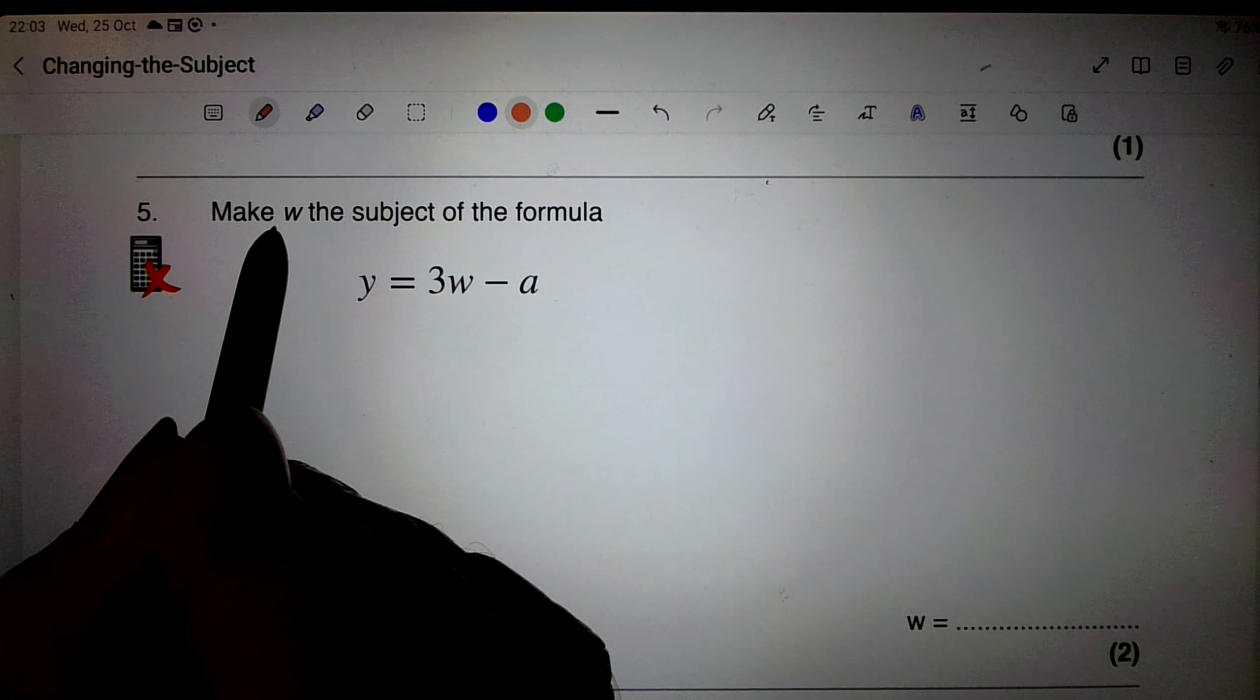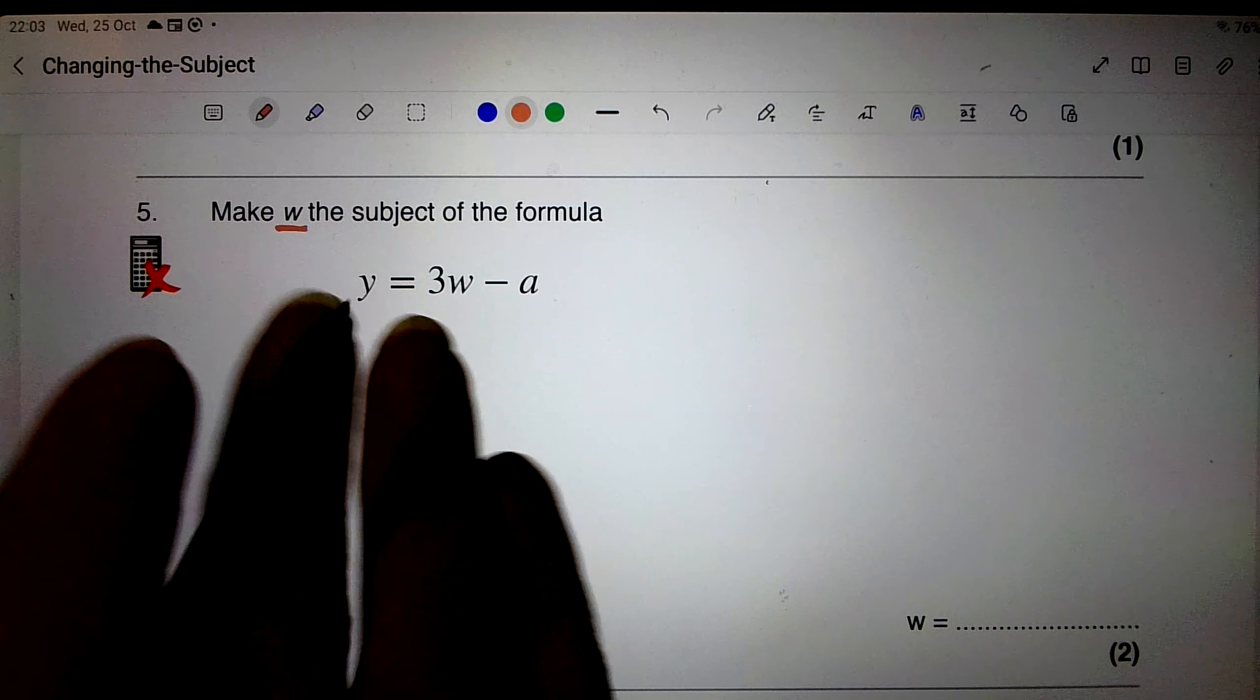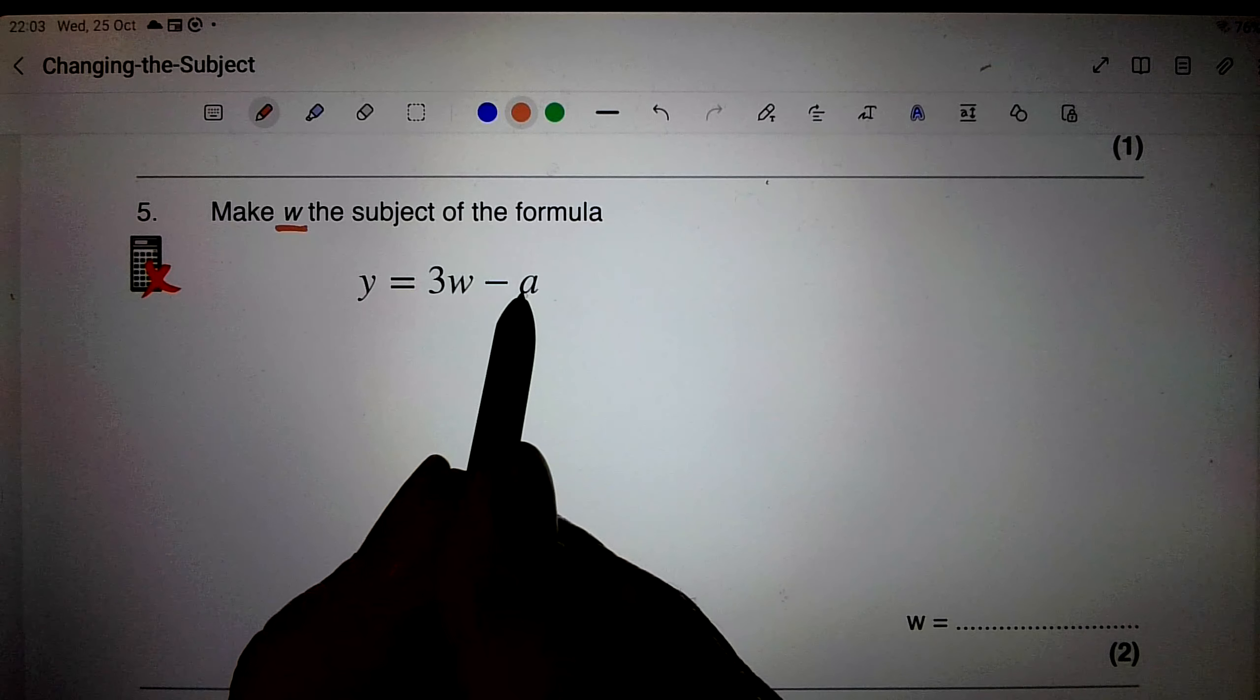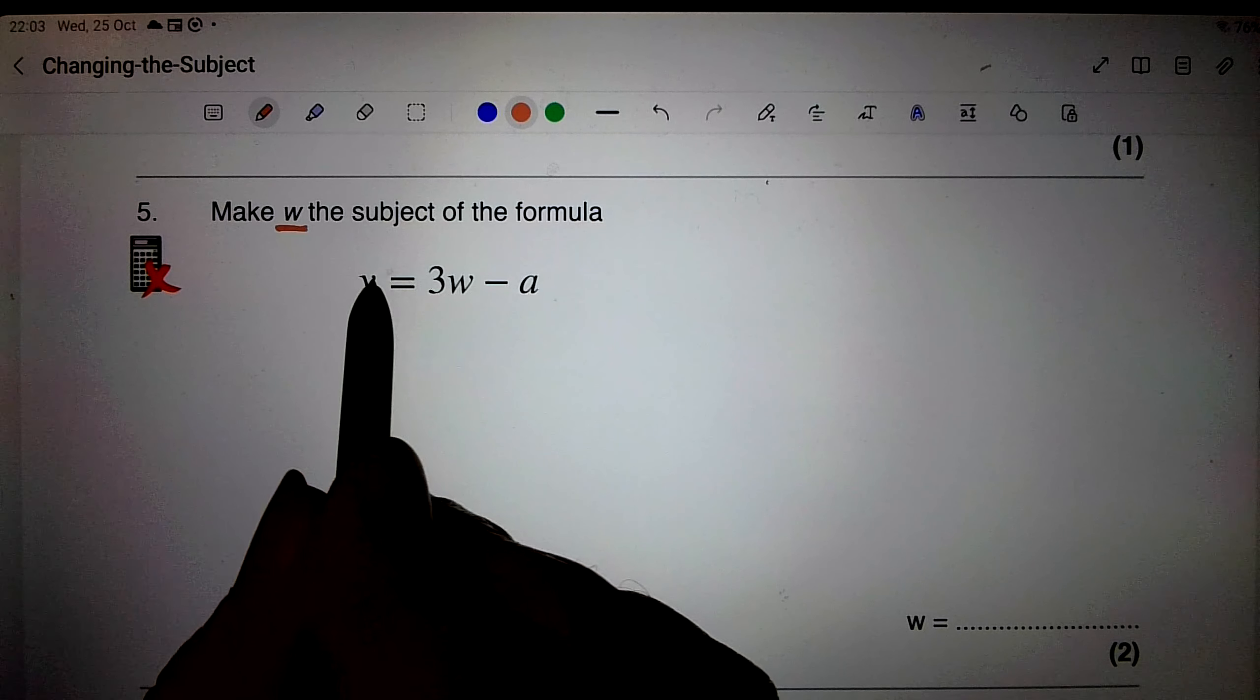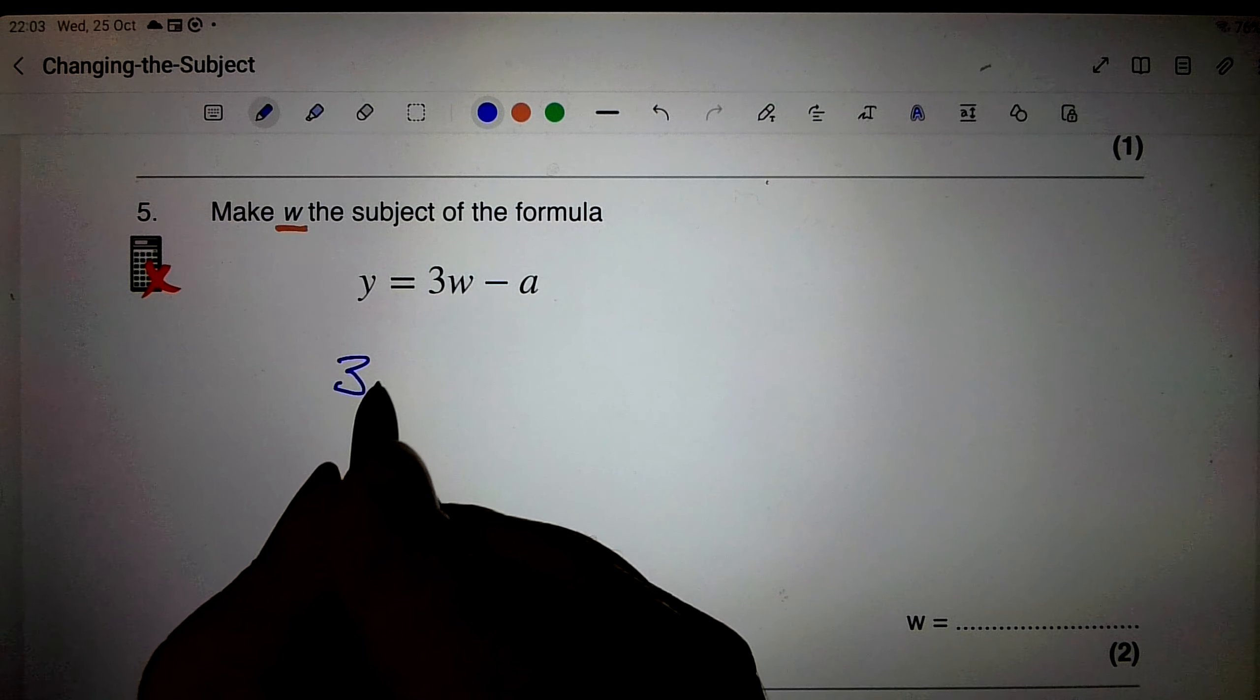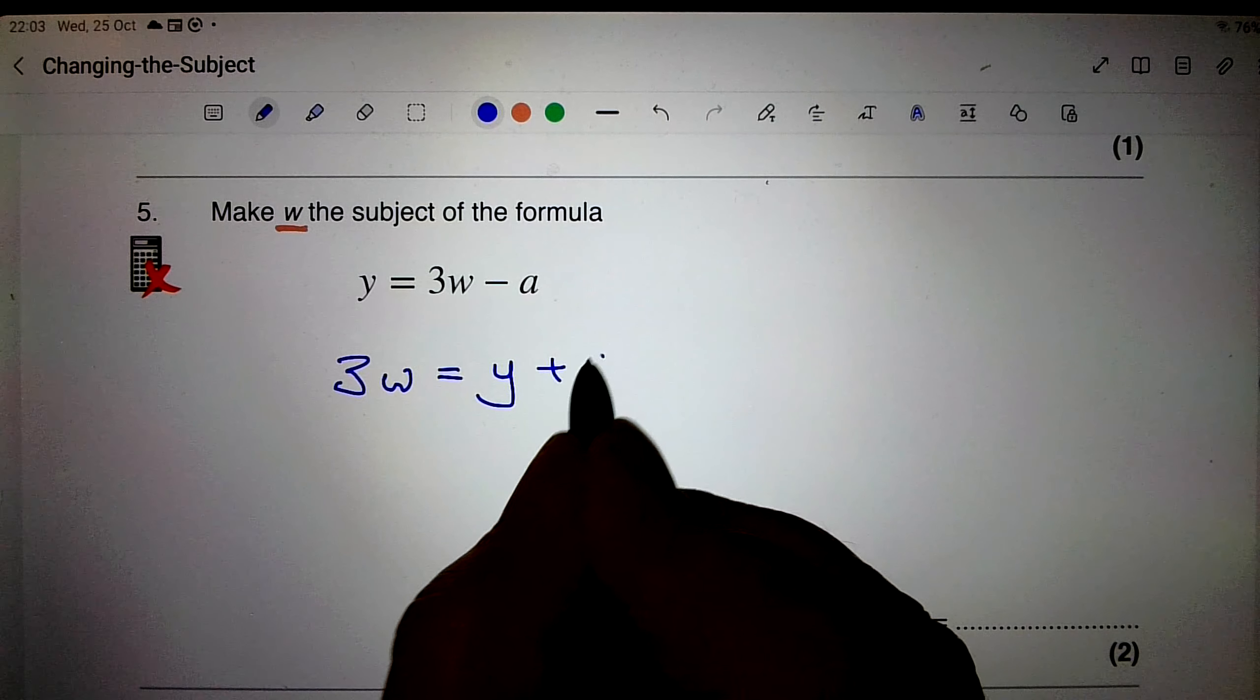So check the question. It says make w the subject of the formula. Right, I'm going to swap that over, just turn it over that way, and I'm going to get rid of the minus a first. When I take it to the other side, it becomes plus a.